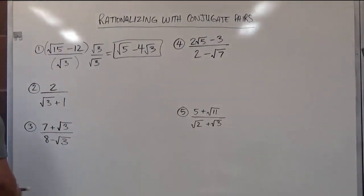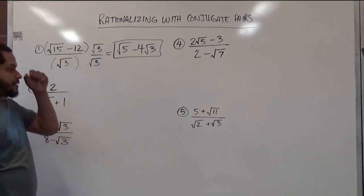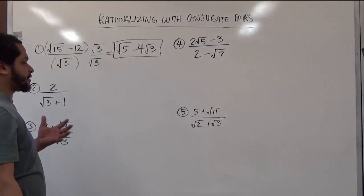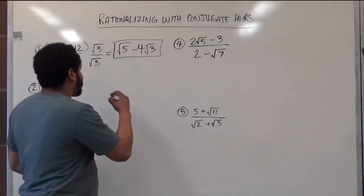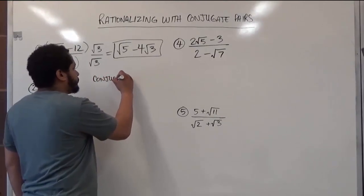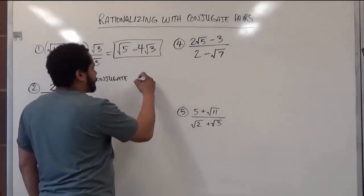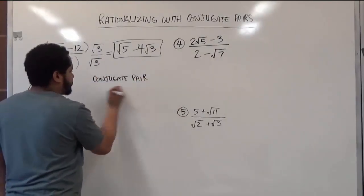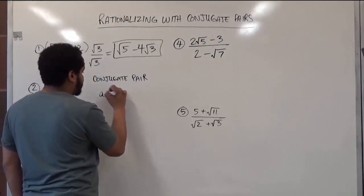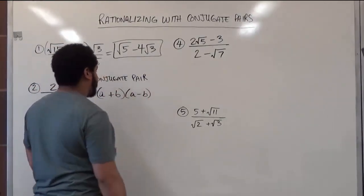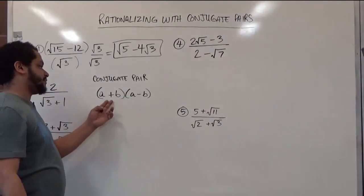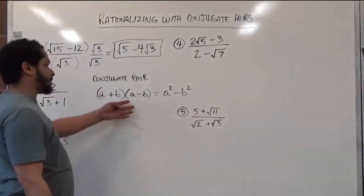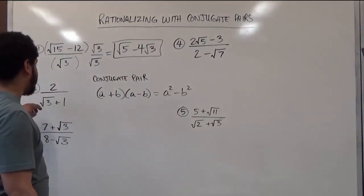Let's move on to the second problem. In this problem we actually have a conjugate pair, so it's only fair that I start elaborating on what the conjugate pair is. A conjugate pair is basically a sum and difference of numbers multiplying in a product. So a conjugate pair of any two numbers would be: a plus b times a minus b. And as you see, this is also known as the difference of two squares, so it produces a squared minus b squared.